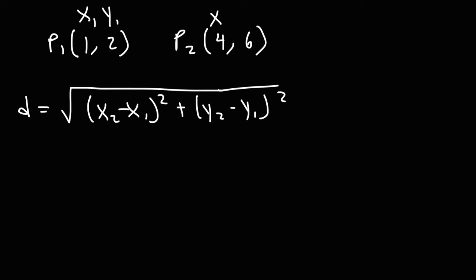And then for the other point, this is going to be x2, y2. So what we need to do at this point is plug in the numbers into the formula. So x2 is 4, x1 is 1, y2 is 6, y1 is 2.